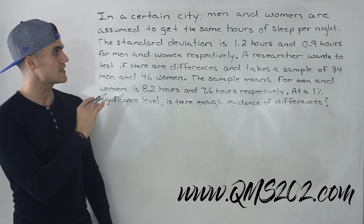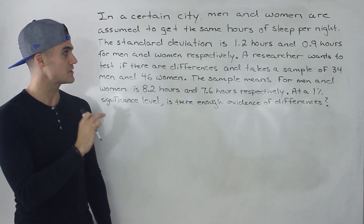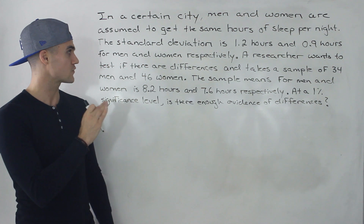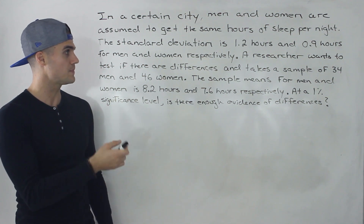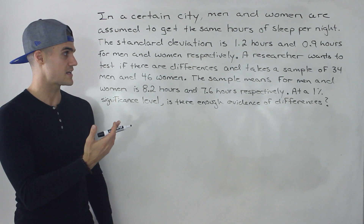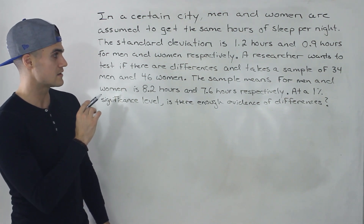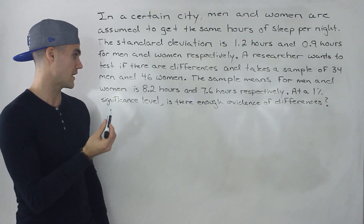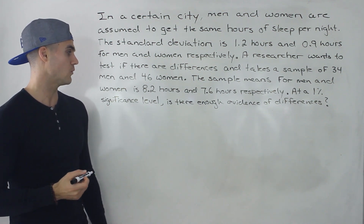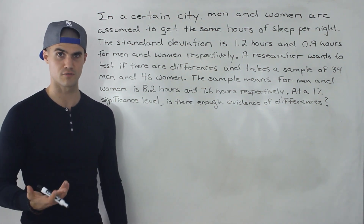We're told that in a certain city, men and women are assumed to get the same hours of sleep per night. The standard deviation is 1.2 hours and 0.9 hours for men and women respectively. A researcher wants to test if there are differences and takes a sample of 34 men and 46 women. The sample means for men and women are 8.2 hours and 7.6 hours respectively. At a 1% significance level, is there enough evidence of differences?